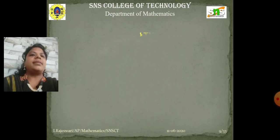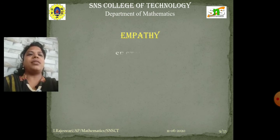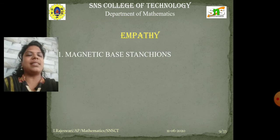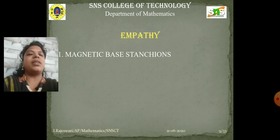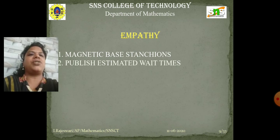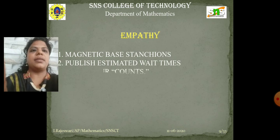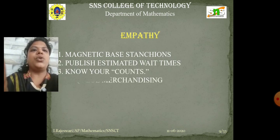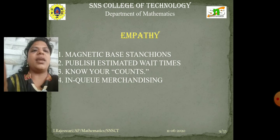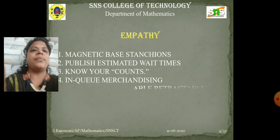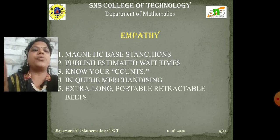Next, I am going to explain the problem statement. I am going to generalize a total of 10 points. In the first set, we are going to discuss 5 points. The first one is magnetic base stanchions. The second one is publish estimated wait times. The third one is know your accounts. The fourth one is in-queue merchandising. The fifth one is extra-long portable retractable belts.